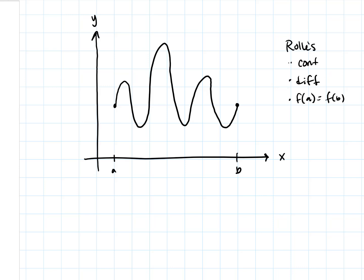What Rolle's Theorem says is: if these three conditions are met — and I hope this makes intuitive and graphical sense — then there has to be at least one place where we have a horizontal tangent line. If where you start is the same location as where you end, f(a) equals f(b), and you have a continuous function with no jumps or gaps, and differentiable with no corners or cusps, then there must be at least one horizontal tangent. On the one I drew, there are actually six such places — c1 through c6.